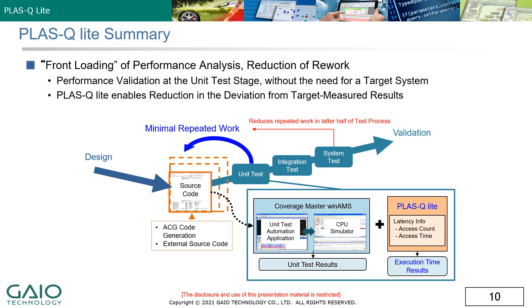To summarize, PLOS Q-Lite allows system designers to estimate the processing power required based on the actual capability of the target system, even before the target system is ready to test.